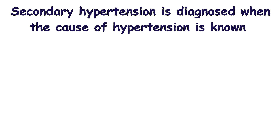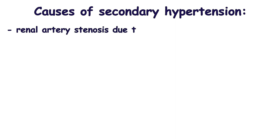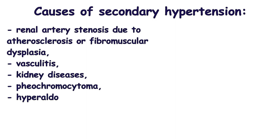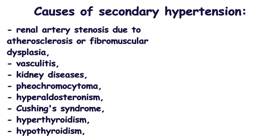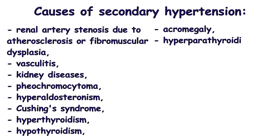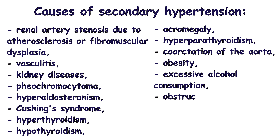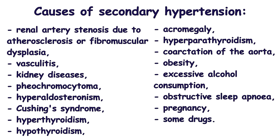Sometimes the causes of hypertension are found — these are most often underlying reversible causes, called secondary hypertension. The causes of secondary hypertension include renal artery stenosis due to atherosclerosis or fibromuscular dysplasia, vasculitis, kidney disease, pheochromocytoma, hyperaldosteronism, Cushing's syndrome, hyperthyroidism, hypothyroidism, acromegaly, hyperparathyroidism, coarctation of the aorta, and obesity.